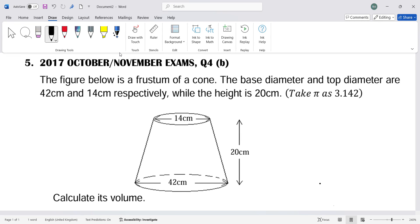Welcome to my page. My name is Mumba, I'm a tutor of maths and physics. In today's video, I'll be answering a math question. The question reads: The figure below is the frustum of a cone. The base diameter and top diameter are 42 centimeters and 14 centimeters respectively, while the height is 20 centimeters. Take π as 3.142. Calculate the volume.